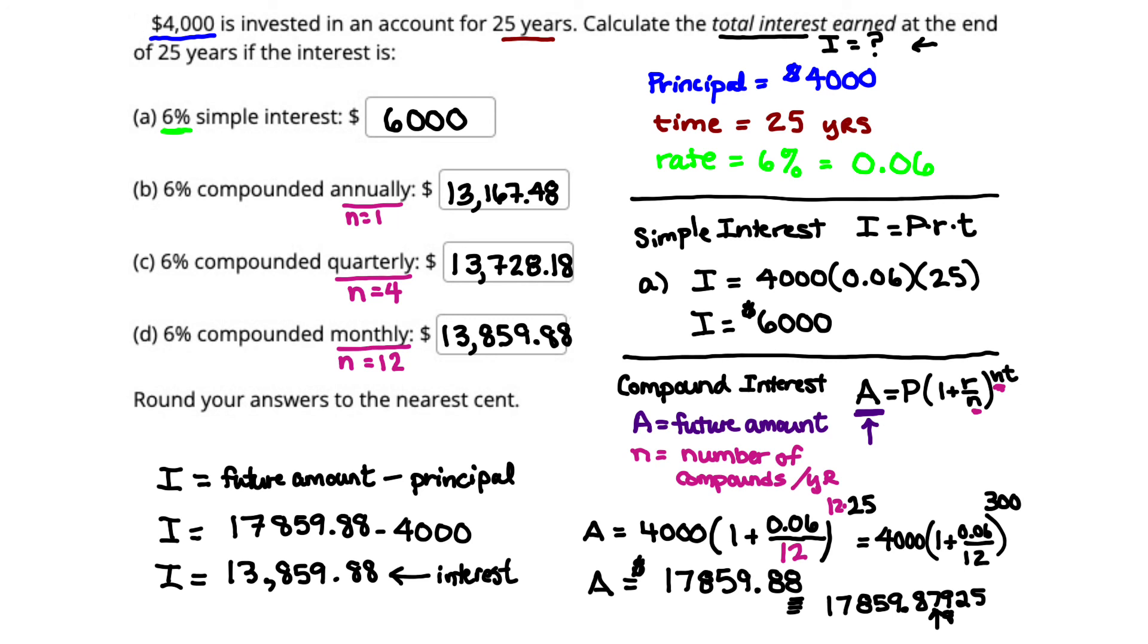So just to summarize, for the first part, you can use your simple interest formula that has I directly solved for. In the second part, if we use our compound interest formula, it gives us our future amount. So in order to get the total interest, we have to take future amount minus principal. Good luck everyone, and I hope it makes lots of sense. Go ahead and email me or message me if you have any questions at all.